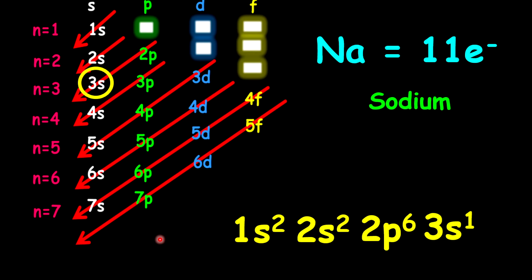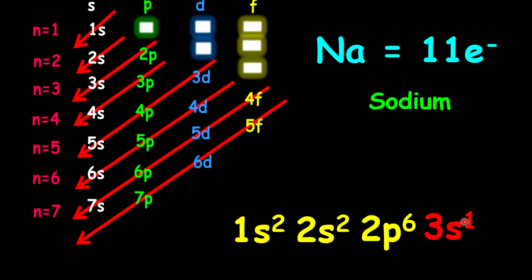Now, remember the valence shell — it is the highest energy level. In this case it is shell 3, which bears our valence electron. Sodium has 1 valence electron, which also means it is in group 1.